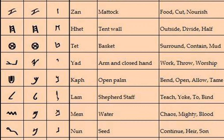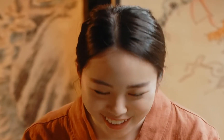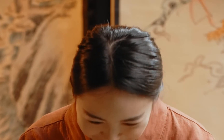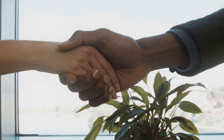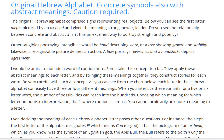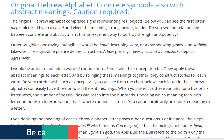Likewise, a recognizable picture defines an action: a bow portrays reverence, and a handshake depicts agreement.